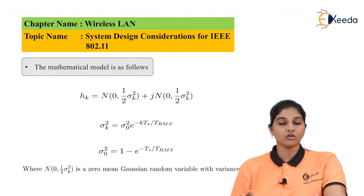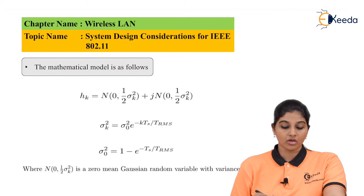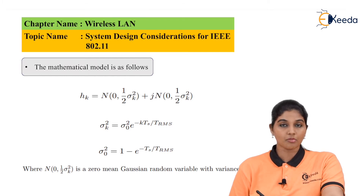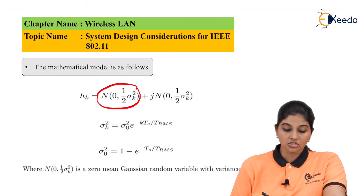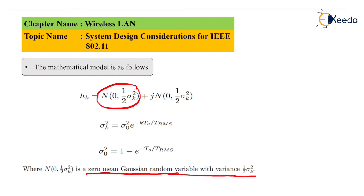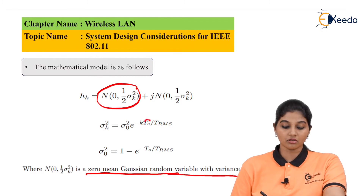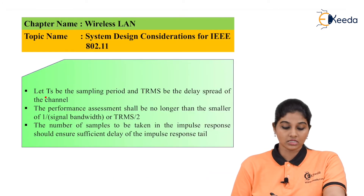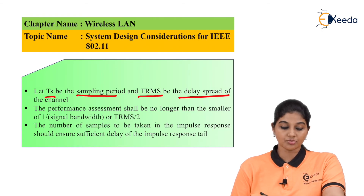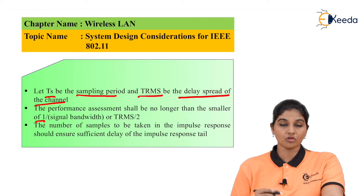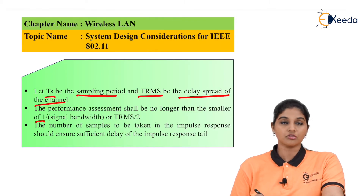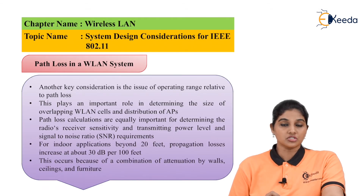Mathematically, the channel model is given as: h_k = N(0, ½σ²_k) + j·N(0, ½σ²_k), where σ²_k = σ²_0 · e^(−k·T_s / T_rms) and σ²_0 = 1 − e^(−T_s / T_rms). Here N(0, ½σ²_k) is a zero-mean Gaussian random variable with variance ½σ²_k. T_s is the sampling period and T_rms is the delay spread of the channel. The performance assessment sampling period shall be no longer than the smaller of 1/(signal bandwidth) or T_rms/2.